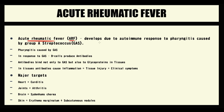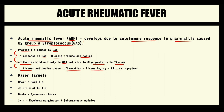Acute rheumatic fever develops due to an autoimmune response to pharyngitis caused by Group A Streptococcus. Initially, Group A Streptococcus causes pharyngitis. In response, B cells produce antibodies against Streptococcus, but antibodies also bind to glycoproteins in the tissues, causing severe inflammation that results in tissue injury with clinical symptoms. In acute rheumatic fever there are 4 major targets: heart, joints, brain, and skin.